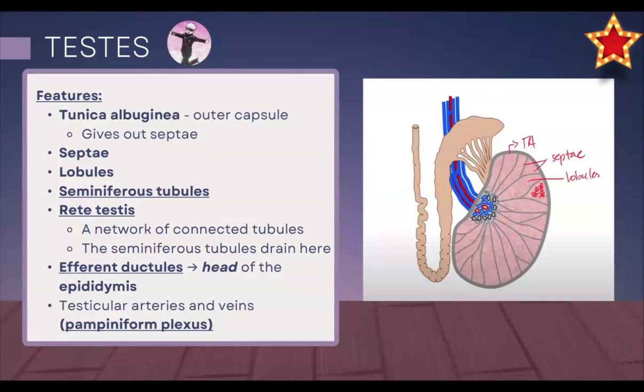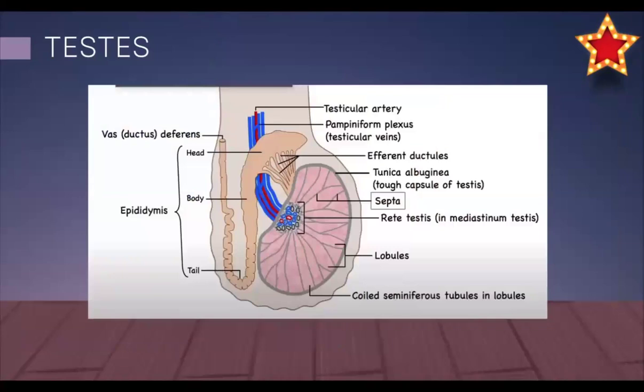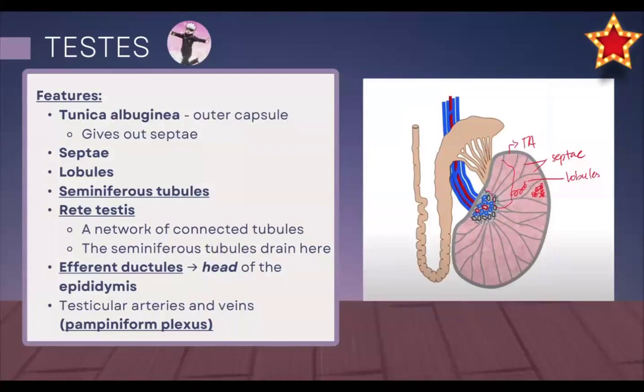The seminiferous tubules, which are in each and every lobule, will end up draining towards a structure called the rete testis. The rete testis is a network which connects all the tubules from all the different lobules and they all drain into it. From the rete testis you have efferent ductules — these are collecting the contents of the rete testis and moving them into the epididymis, as pointed out in the other diagram.